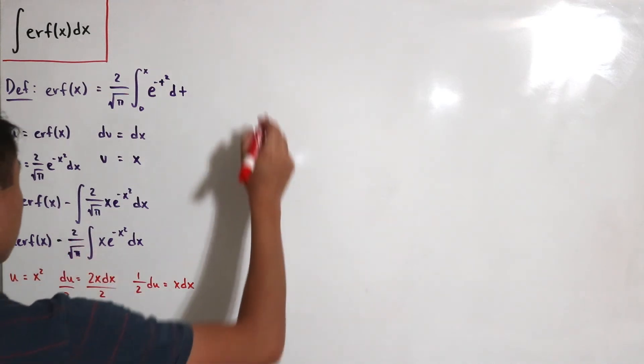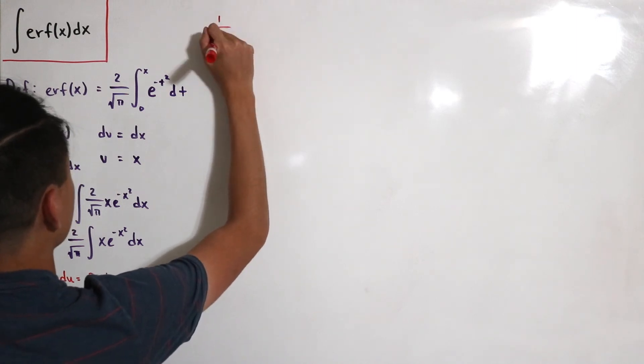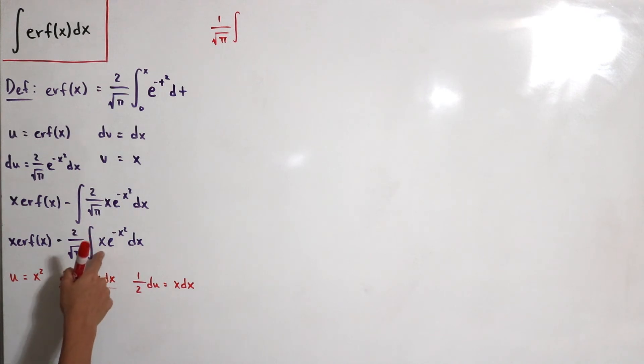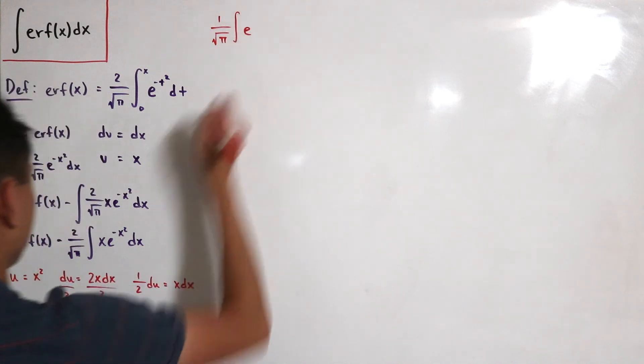Rather, I can move the one half outside and then the twos will cancel so we have just one divided by the square root of π and then we integrate this.